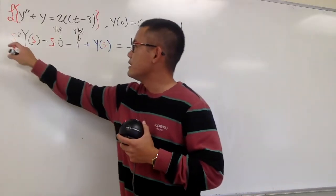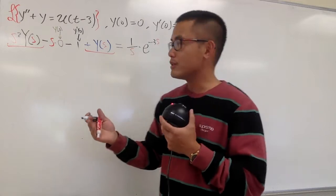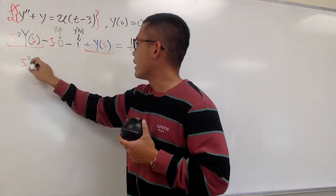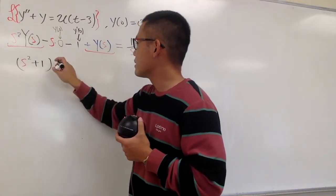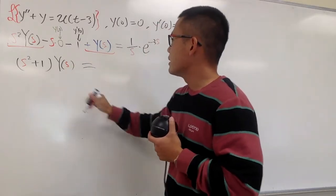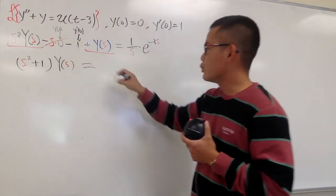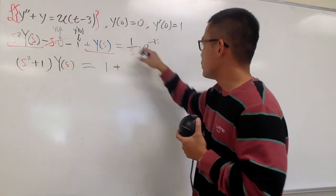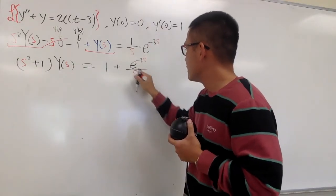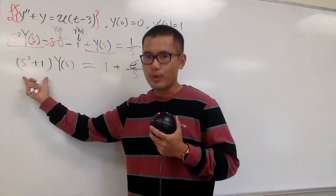On the left-hand side, we see that we have this term, and that term, they both have the Y of S. So, I'm going to just put them together. First, we will have the S squared, and then this is plus 1, and then I will factor out the Y of S at the end like this. And this is going to be, and by the way, this is going to be 0, so that's it. And then bring the 1 to the right-hand side. So, we will have 1, and then let me put down plus, and let me write this down as E to the negative 3S over S.